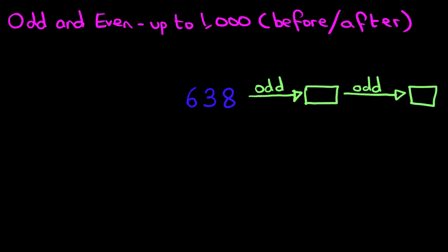Now, the best way to do this is to work out whether 638 is odd or even. Don't forget, the odd and the even numbers go straight after another. If one number is odd, the one after it is even. The one after that is odd. It keeps going odd, even, odd, even, odd, even, all the way through. So 638, is that odd or even?